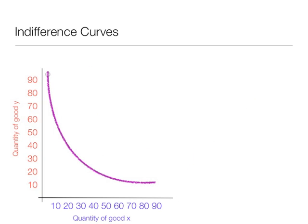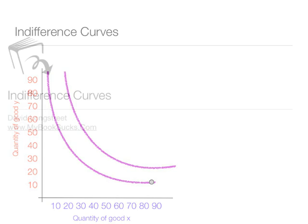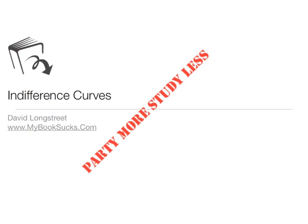Now keep in mind, that movement along a curve, utility is constant. Just like that. The second indifference map has a higher level utility than the first indifference map I drew. That's indifference curves, and remember to party more and study less.